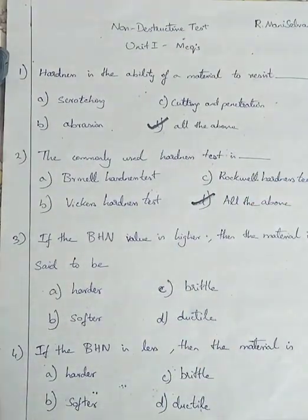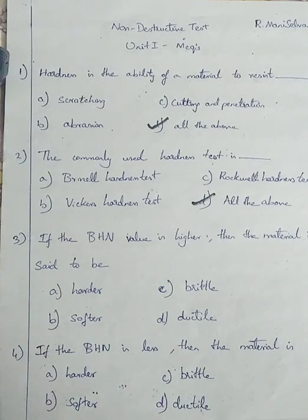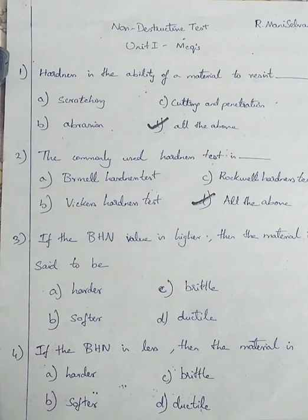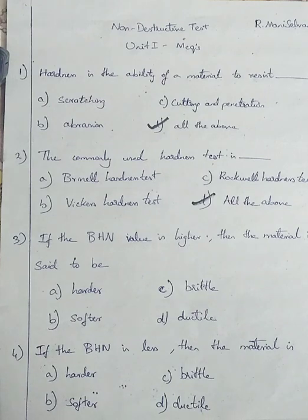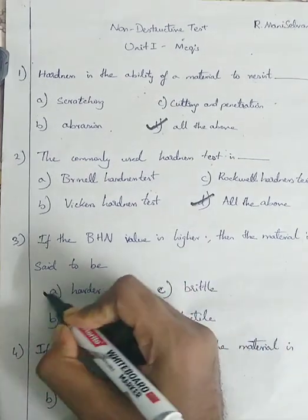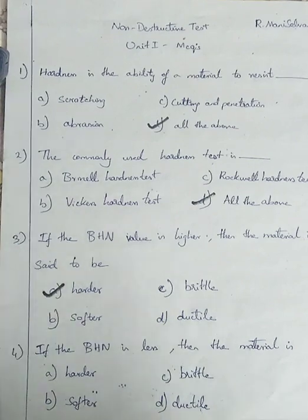Question number 3. If the BHN value — Brinell hardness number value — is higher, then the material is said to be: Option A harder, Option B softer, Option C brittle, Option D ductile. If the BHN value is higher, the material is said to be harder. Going with option number A, harder.